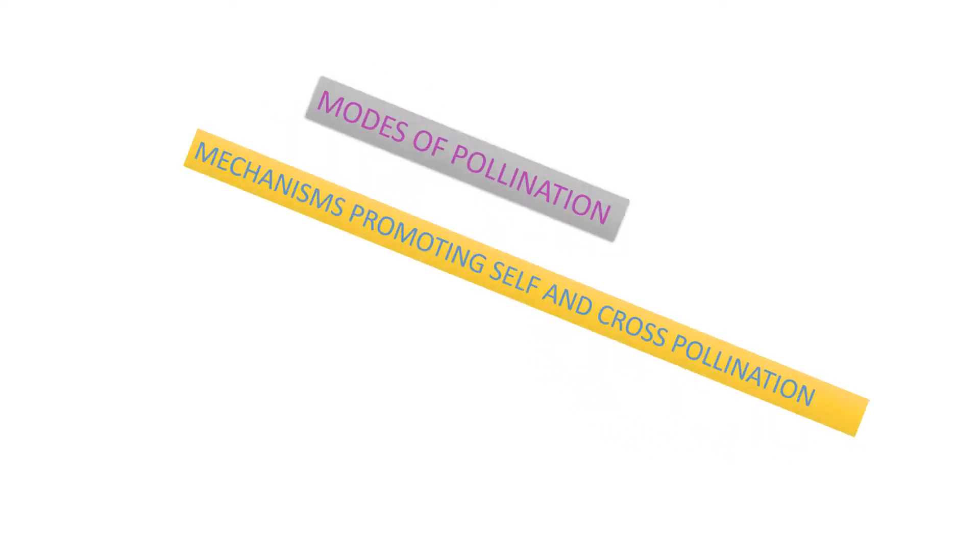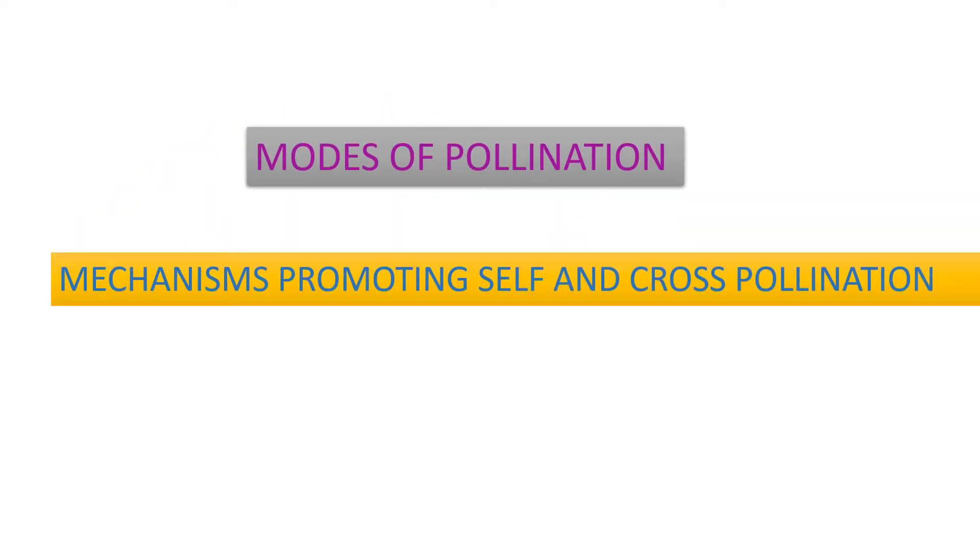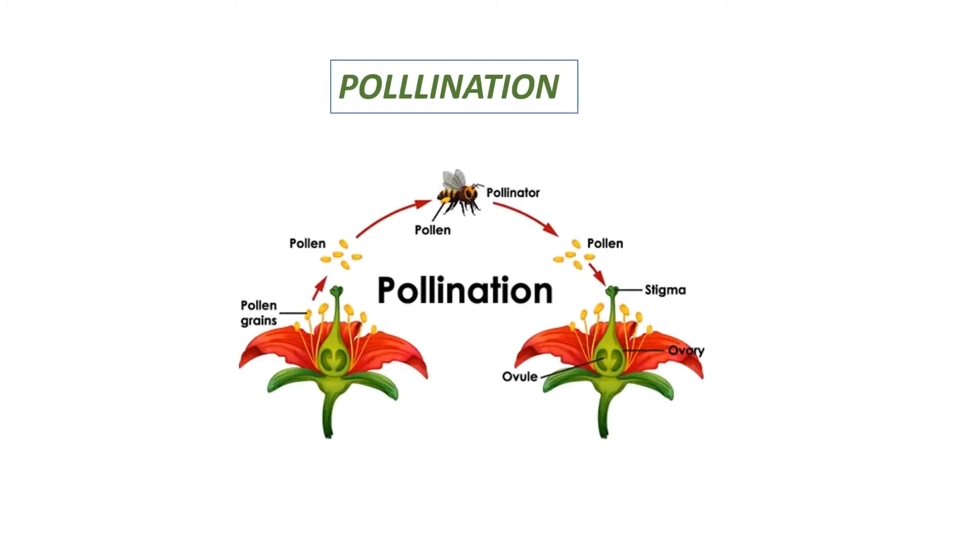Hello everyone, welcome back to Science Made Easy. Today Science Made Easy is again back with an interesting topic about modes of pollination and mechanisms promoting self and cross pollination. To begin with, let us see the definition of pollination. Pollination is referred to as the transfer of pollen grains from anthers to stigma.